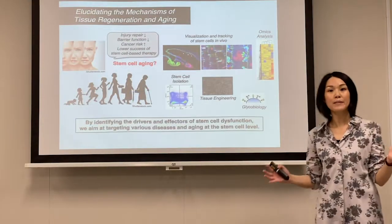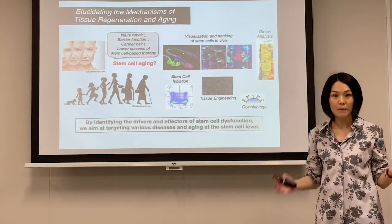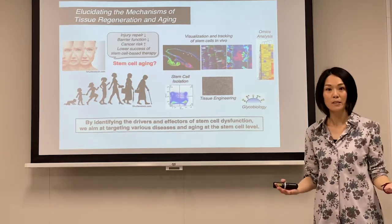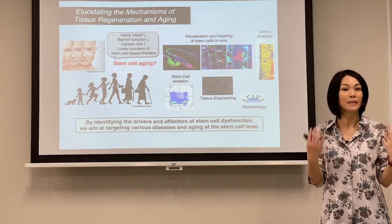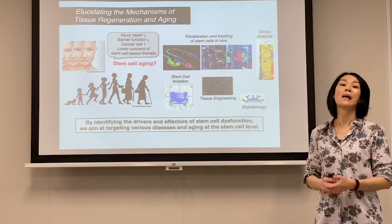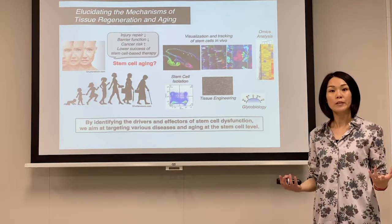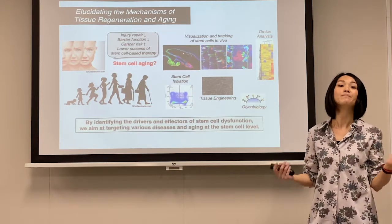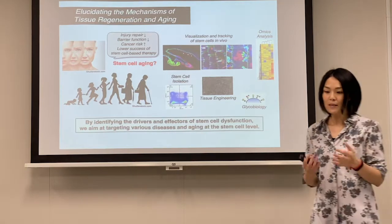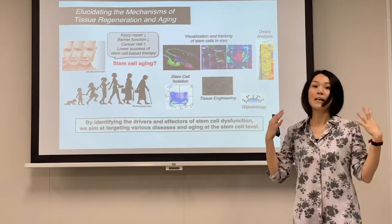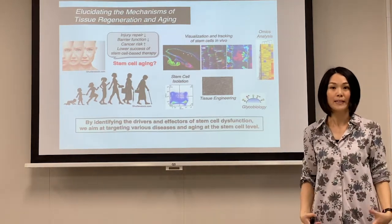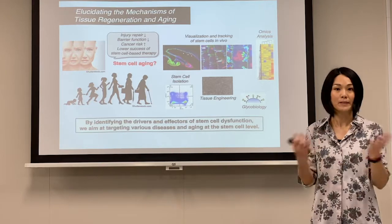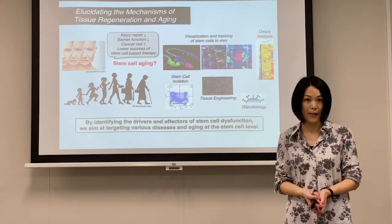Stem cells are special types of cells that have the ability to renew themselves, so-called self-renewal, and to produce a mature differentiated type of cell. Those tissue stem cells reside in different parts of the body, and they contribute to homeostatic tissue turnover or repair.